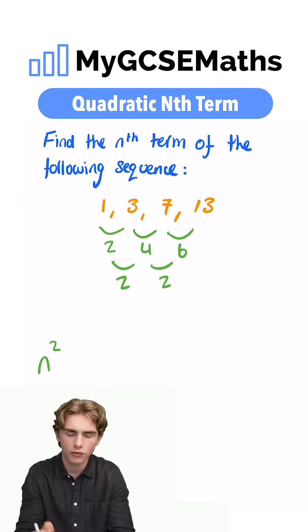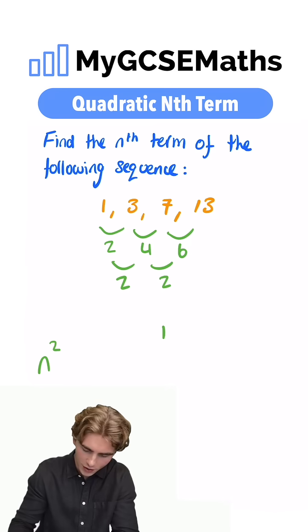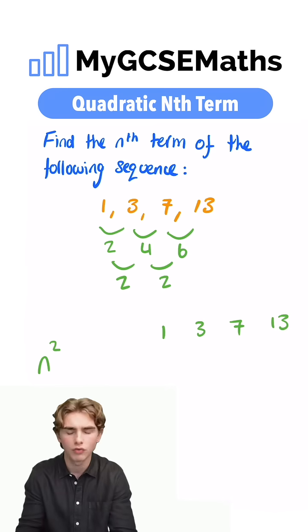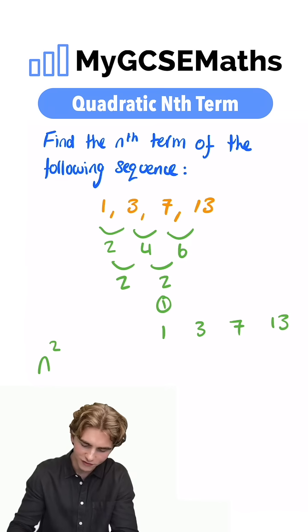Now, what next? We're going to rewrite our sequence. We have 1, 3, 7, 13, and we're also going to write our term numbers. 1 is the first term, 3 is the second term, 7 is the third term, and 13 is the fourth term.